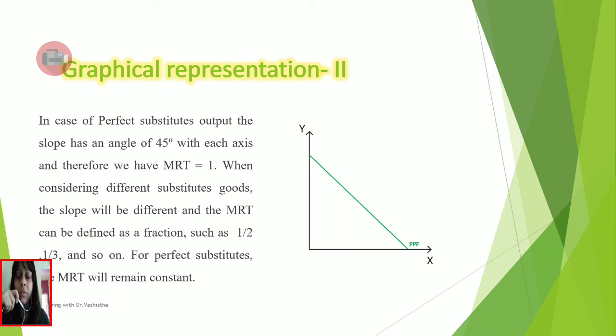The slope will be different, and MRT can be defined as a fraction such as 1 to 2, 1 to 3, and so on. For perfect substitute goods, the MRT will remain constant, equal to 1. That is why there is this kind of curve which you can see, making a 45 degree angle from the origin.